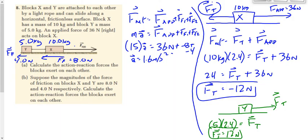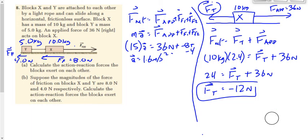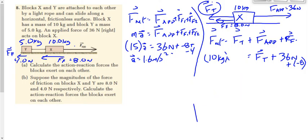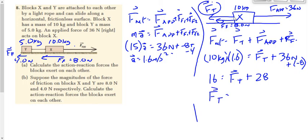If we analyze object X, now we have the tension to the left, but we also have a force of friction to the left of 8 newtons. So we have: 10 times the acceleration of 1.6 gives me 16; FT plus 36 minus 8 gives me 28. Then 16 minus 28 gives me negative 12 newtons.